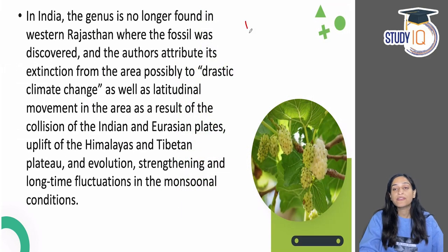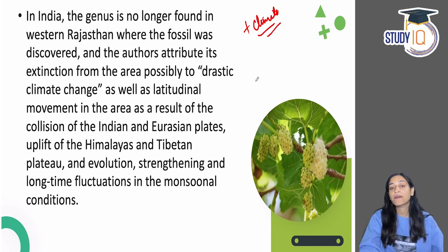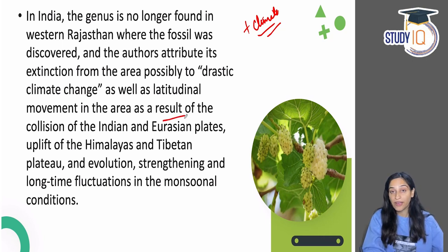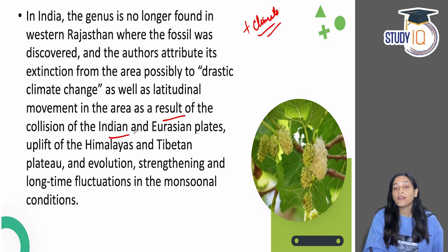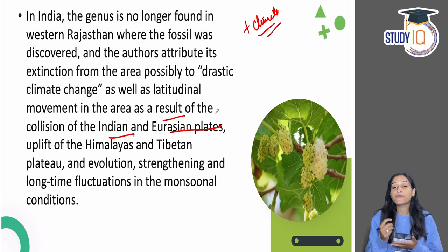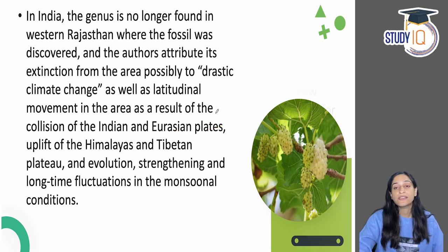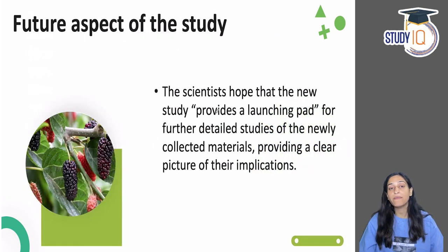The most important question for study is how the climate must have changed — because if it is not found in that area today, what kind of climate change occurred? The Indian and Eurasian plates may have collided, the Himalayas were uplifted, the Tibetan Plateau evolved, and there were long-term fluctuations in seasonal rainfall and monsoonal conditions after the Eocene period. Many things can be studied from this reference.